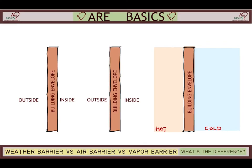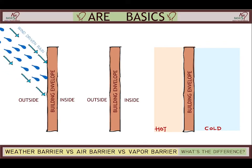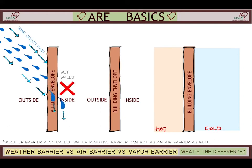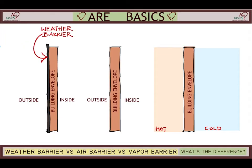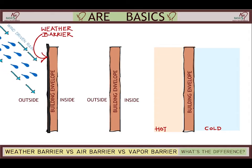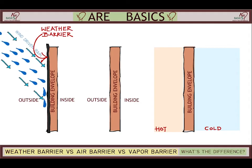A weather barrier — on an assembly without a weather barrier, rain and moisture seeps through the envelope and leads to various issues such as rot and mold. When applied on an exterior envelope, a weather barrier keeps the water outside, thus keeping the walls and interiors dry, like a rain jacket.